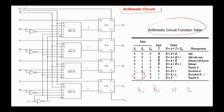And if carry-in is 1, then we have just a transfer, because the result of adding 1 to all ones is 0. So this is equivalent to A minus 1 plus 1, which is just a transfer operation.